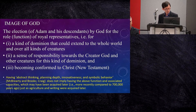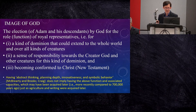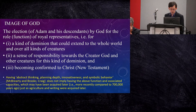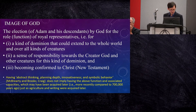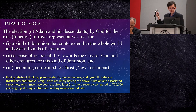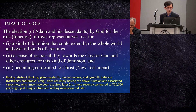With this in mind, I understand the image of God as referring to the election by God of Adam and his descendants for the role or function of royal representatives — that is, for a kind of dominion that could extend to the whole world and over all kinds of creatures, a sense of responsibility towards the creator God and other creatures for this kind of dominion, and becoming conformed to Christ. I want to highlight here that merely having abstract thinking, blending depth, innovativeness, symbolic behavior, or even the use of wood — which Dr. Craig mentioned in his talk — those are impressive, but they are not sufficient for implying these characteristics which I listed according to the Bible.